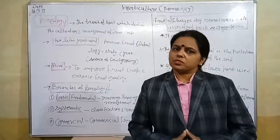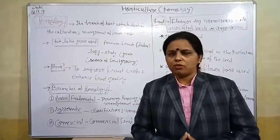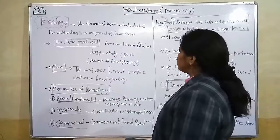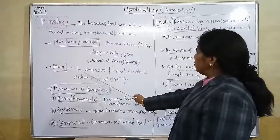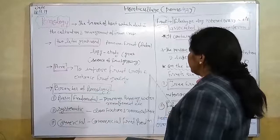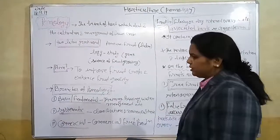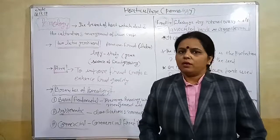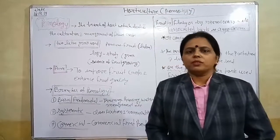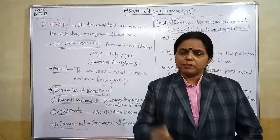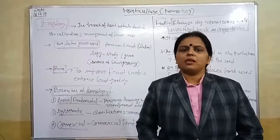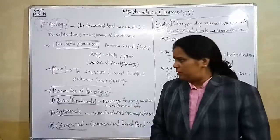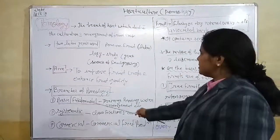According to this definition, pomology is the science or study of fruit growing. Now a question arises — what is the need to study about pomology, or what are the major objectives to study about pomology? The major aim to study about pomology is to improve fruit crops and enhance fruit quality. So we have understood that in pomology we study about fruit production and its major objective is to enhance fruit quality and crop production.